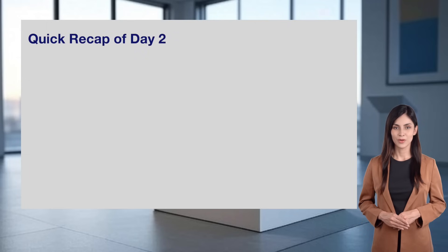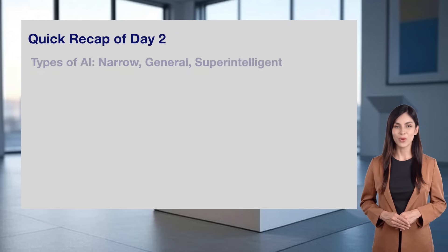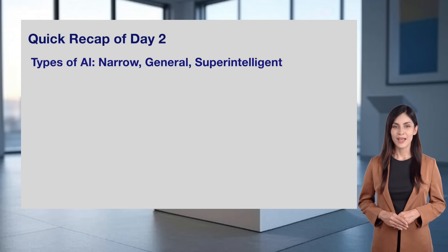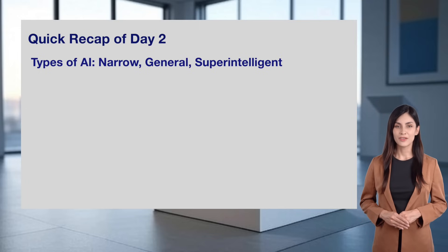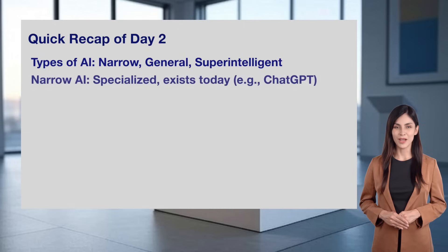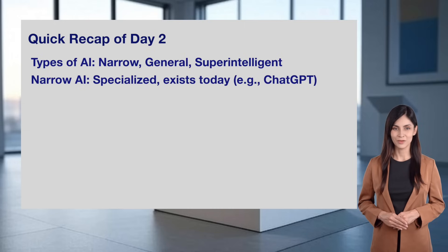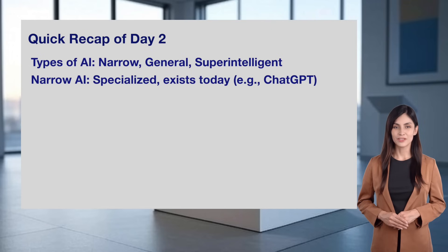Before we dive in, let's recap Day 2. We explored the three types of AI: narrow, general, and superintelligent. Narrow AI is specialized and exists today, like ChatGPT, which Sophia showed us.